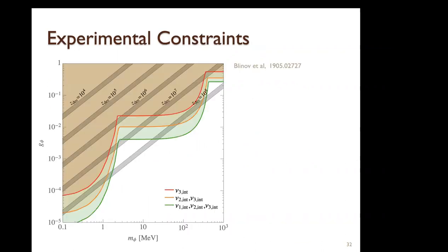In this Majoron model, there are many experimental constraints from tau decay, kaon decay, and double beta decay. However, if the Majoron couples only to specific neutrino species, experimental constraints can be relaxed. In our work, we consider the fraction of interacting neutrinos as a free parameter. We consider both the all-species interacting case and cases with smaller fractions of self-interacting neutrinos. This gives us four additional parameters beyond the six standard cosmological parameters: N_eff,fs (free-streaming species), N_eff,int (interacting species), z_dec (decoupling redshift), and the neutrino mass sum.